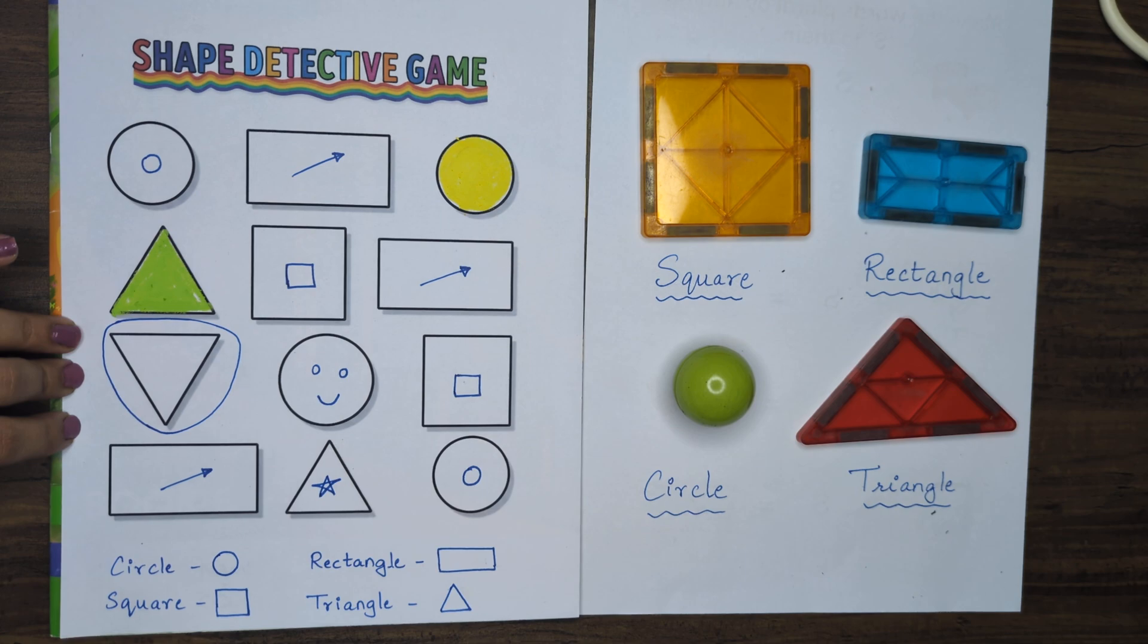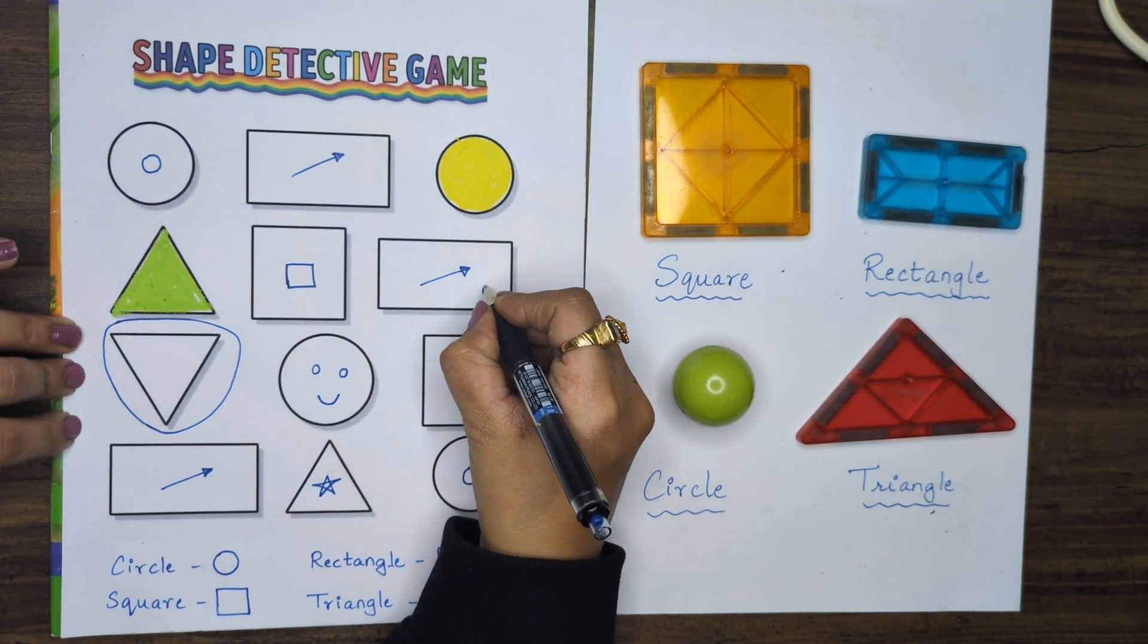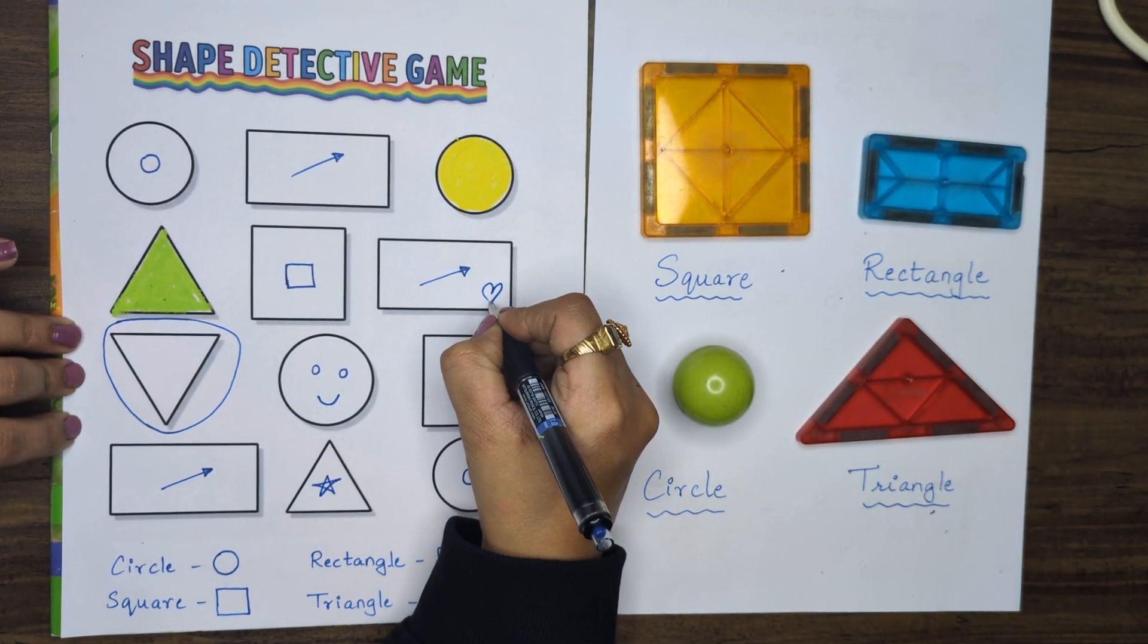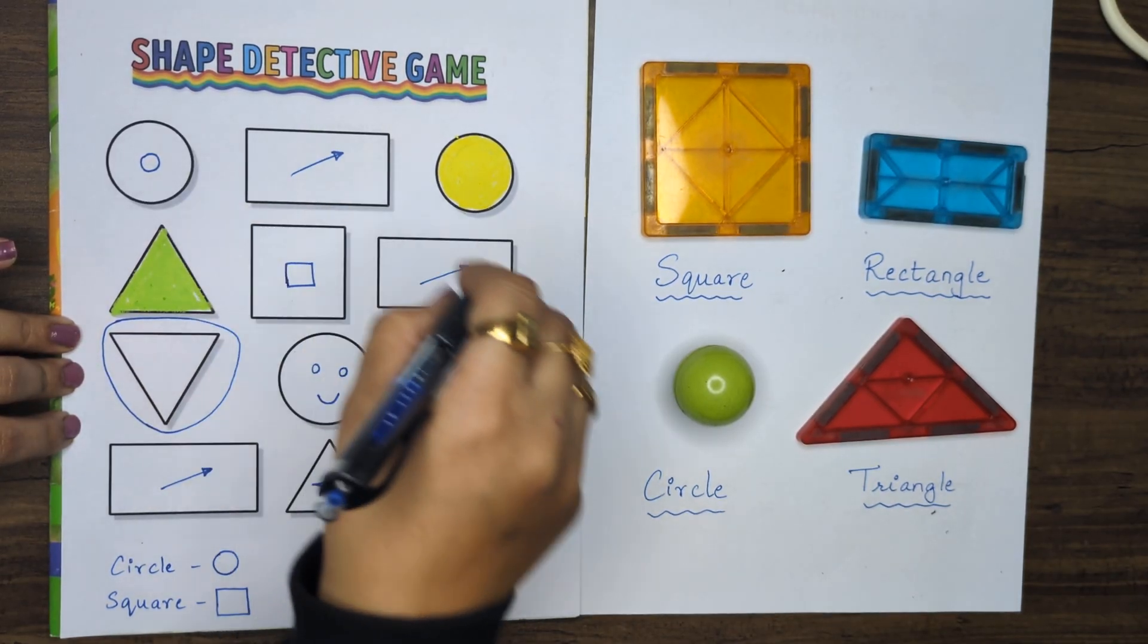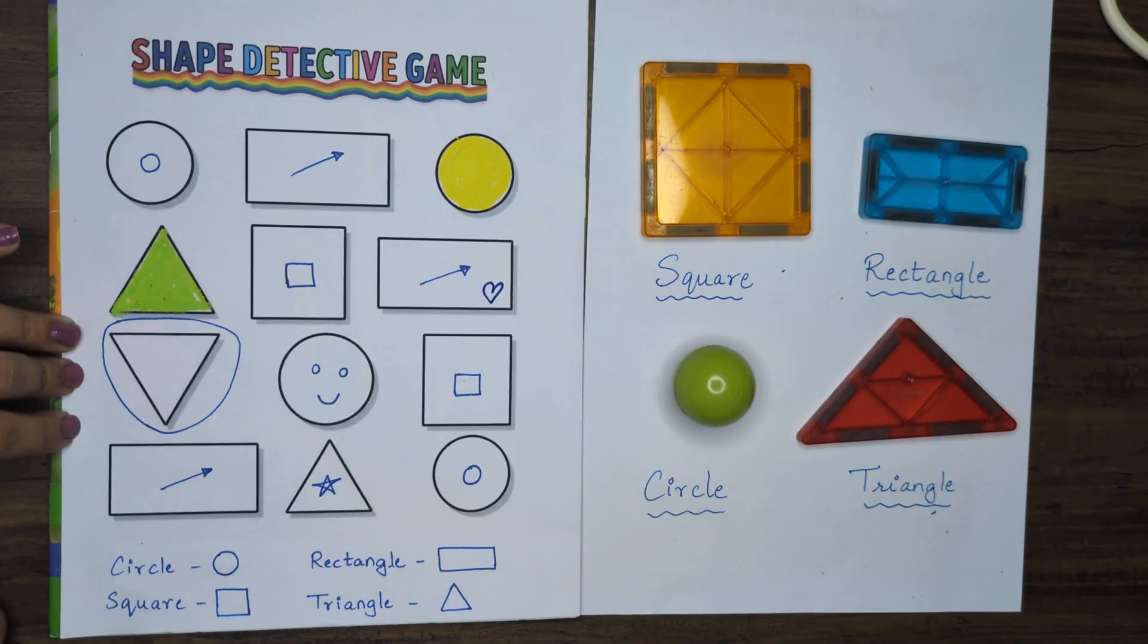Draw a heart around your favorite shape. My favorite shape is rectangle. So I am drawing a heart in the rectangle figure. You can choose any of your favorite shapes.